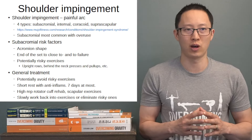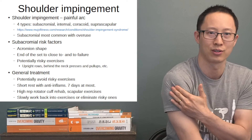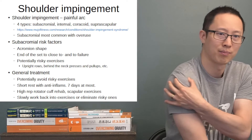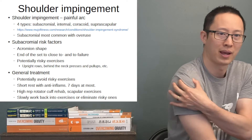Primary impingement is the rubbing of the structures underneath the shoulder. Secondary impingement is usually due to another injury causing secondary impingement symptoms — the other injury happens, and then you get some dysfunction of the shoulder which causes rubbing. It's termed secondary impingement because it's not the main cause.